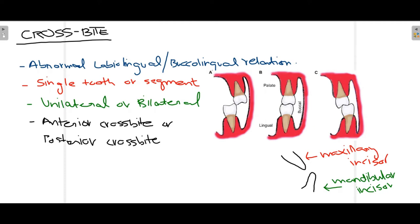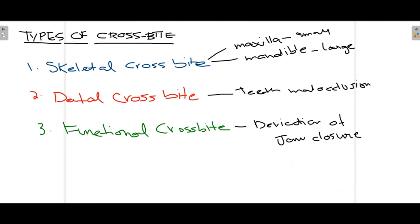Crossbite can also be either anterior or posterior. Anteriorly it involves your incisors and canines, and posteriorly it can involve your premolars and molars. For anterior crossbite, normally your maxillary incisor is present ahead of your mandibular incisor, but when crossbite occurs the relation is reversed — the mandibular incisor is present in front of the maxillary incisor.